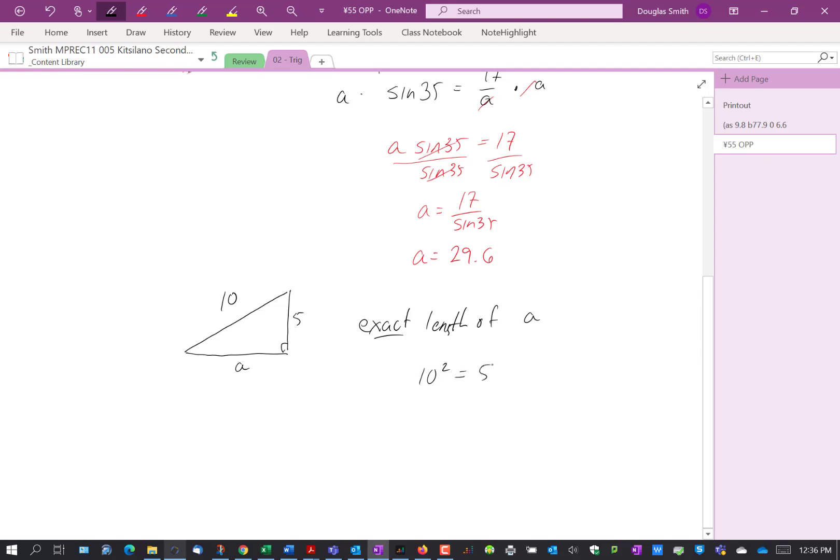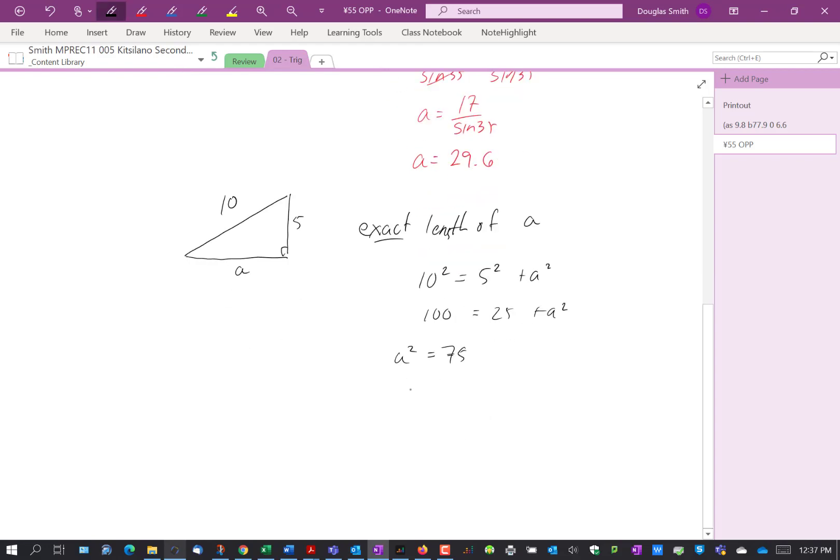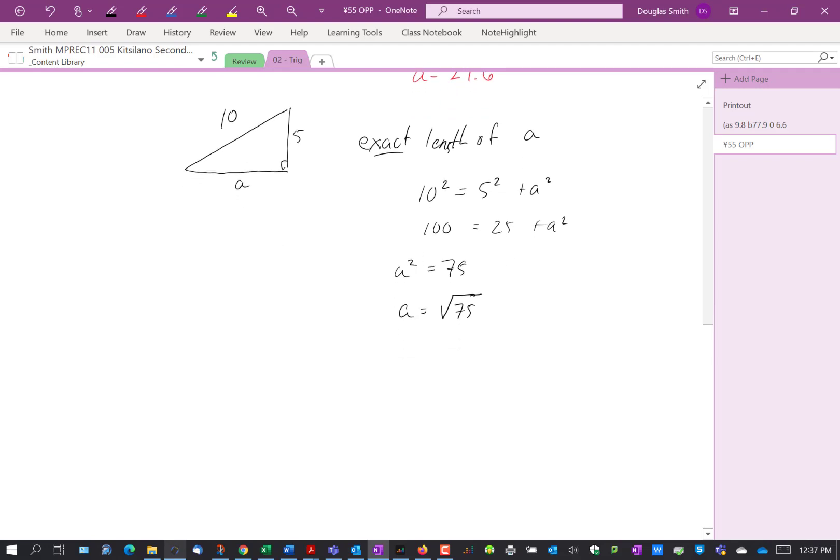So we have Pythagorean theorem: 10 squared equals 5 squared plus A squared. So we have 100 equals 25 plus A squared, so that's A squared is 75, therefore A is square root of 75. So that's the exact answer to A.